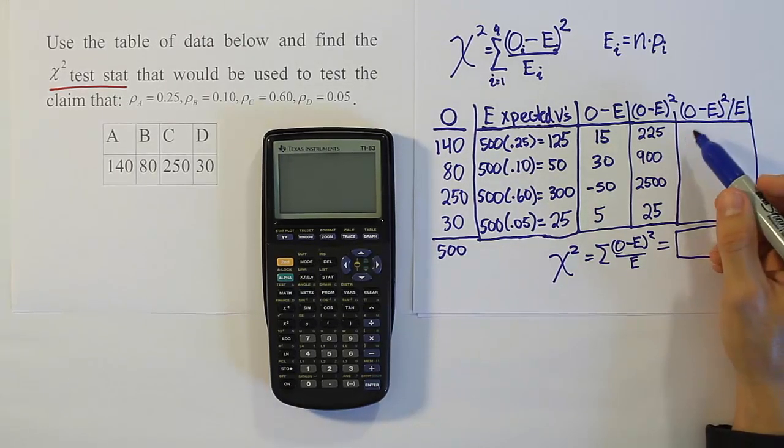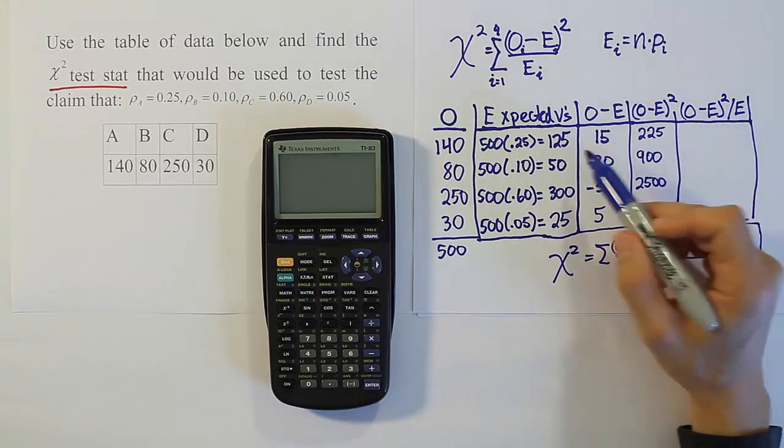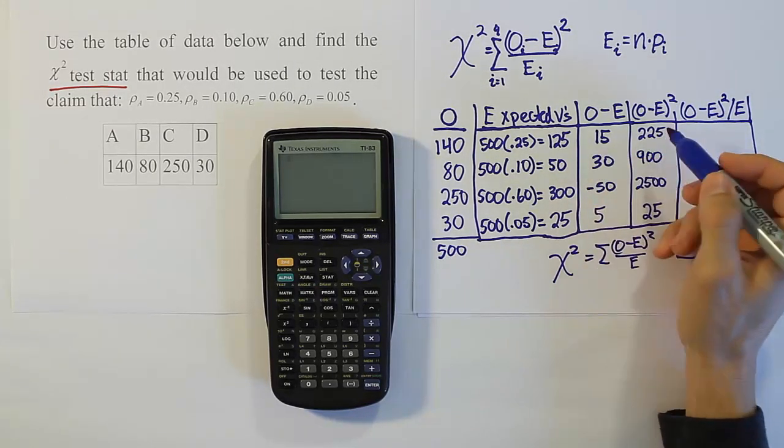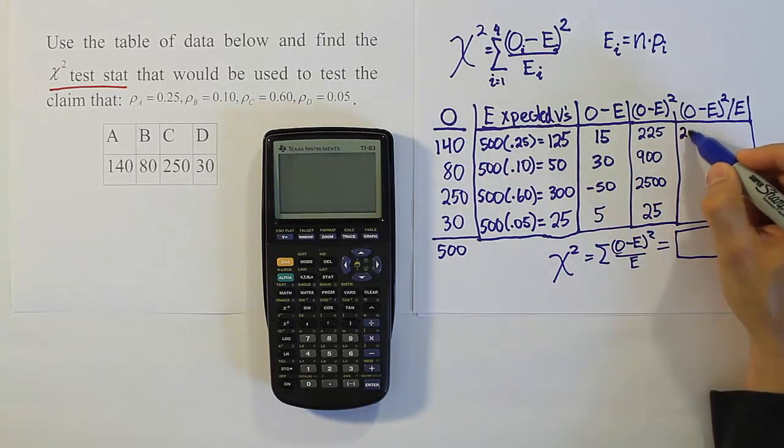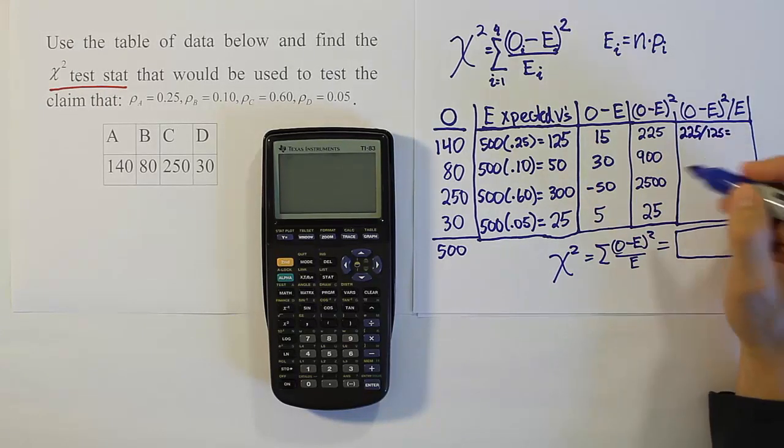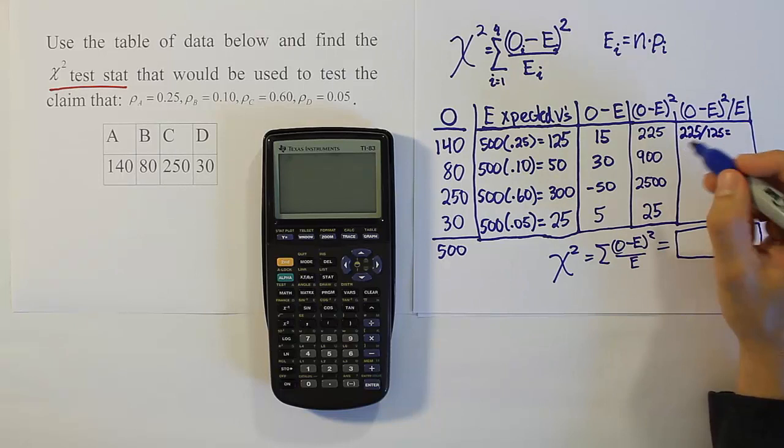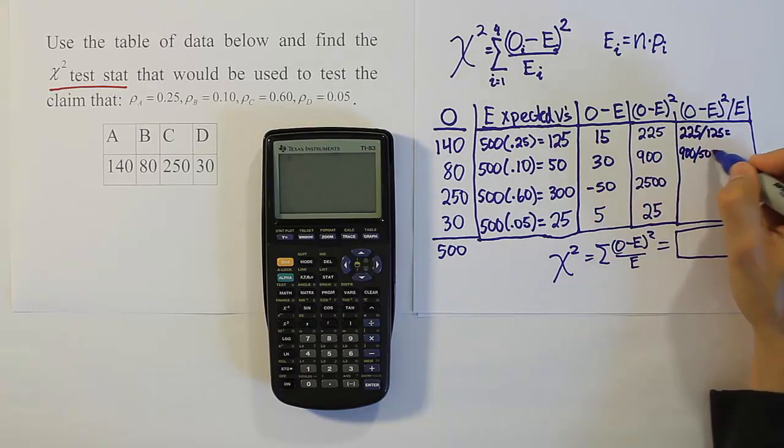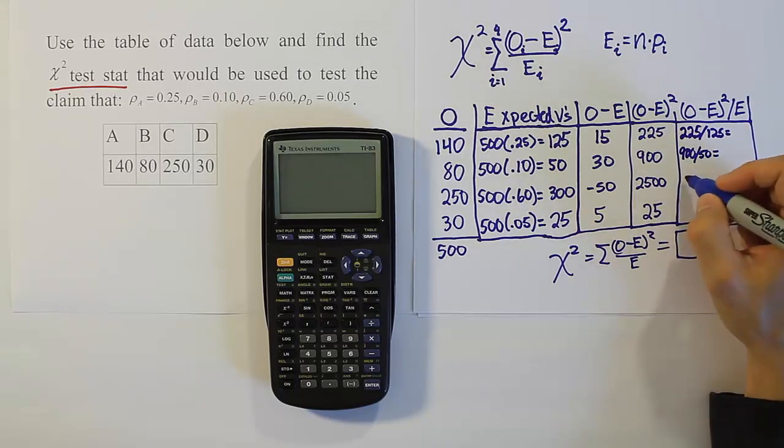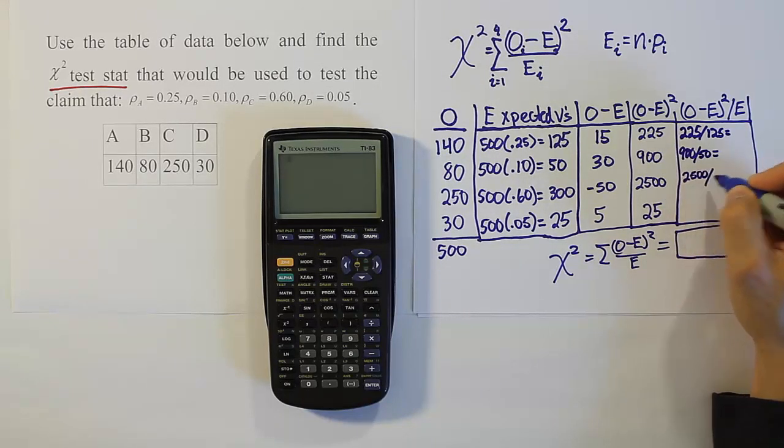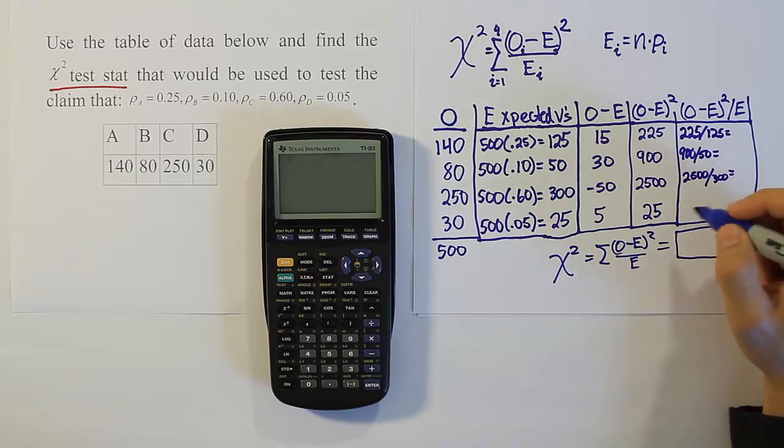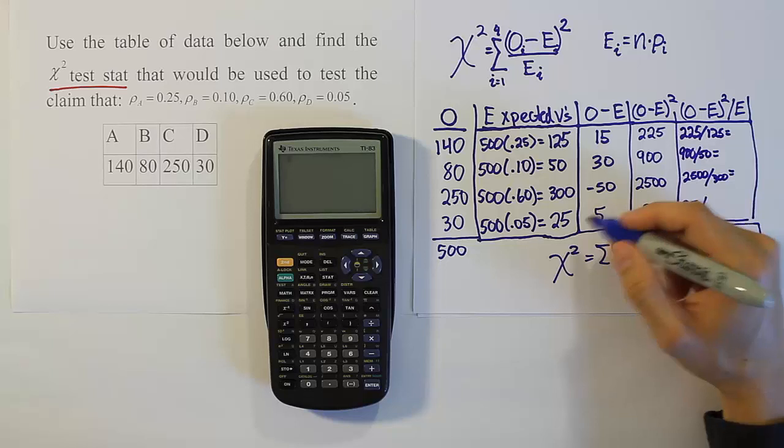Alright, so for each one, we have to do this column divided by E. So in this case, it would be 225 divided by 125, right? 225 divided by 125, for example, right? So on and so forth. Then we'll do 900 divided by 50. Then we'll have 2,500 divided by 300. And then finally 25 divided by 25.